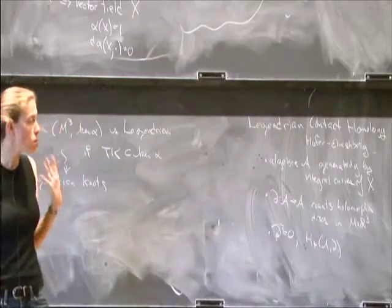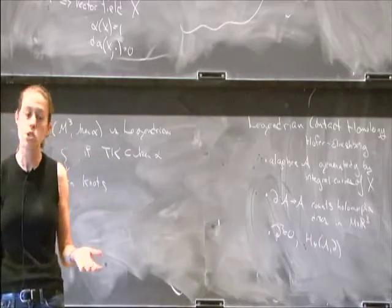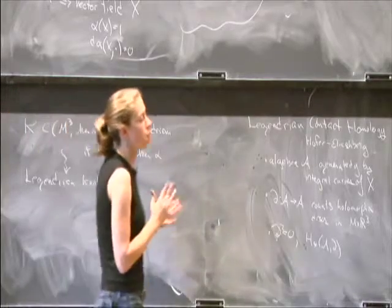This invariant is successful in some sense in that we can distinguish knots that were previously not able to be distinguished. But it's also an interesting feature because just at a topological level, knots in circle bundles haven't been studied particularly extensively.